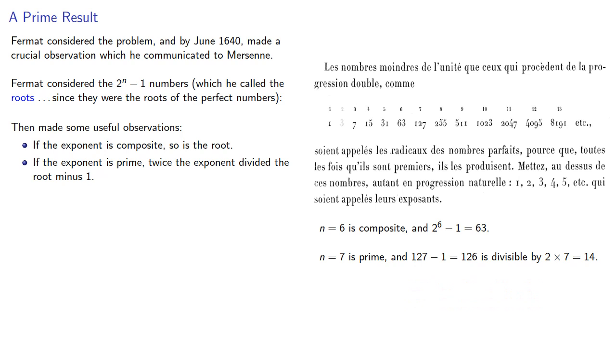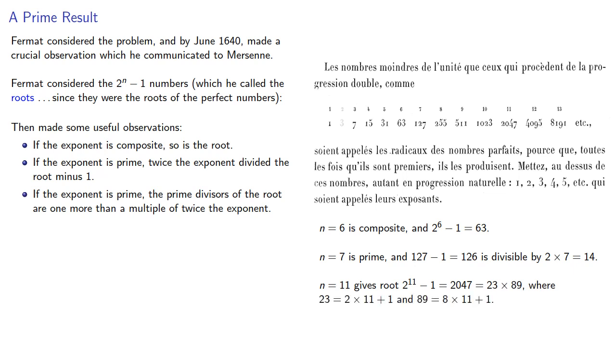Probably the most important observation: if the exponent is prime, the prime divisors of the root are one more than a multiple of twice the exponent. For example, n = 11 gives the root 2^11 - 1 = 2047, and it turns out this number is composite: 23 times 89. We notice that 23 is twice the exponent plus 1, and 89 is 8 times the exponent plus 1.